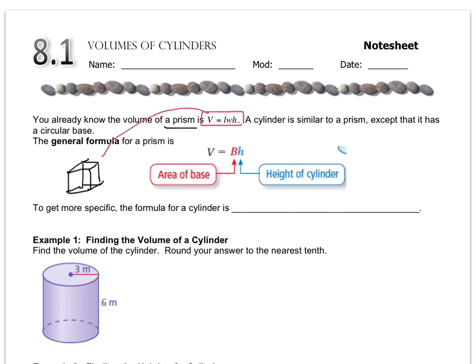But there's a more general formula you can use, which is V equals big B times H. The reason it's more general is because this capital B is interchangeable. We use a capital letter because it doesn't stand for one of the side lengths — it stands for another formula.